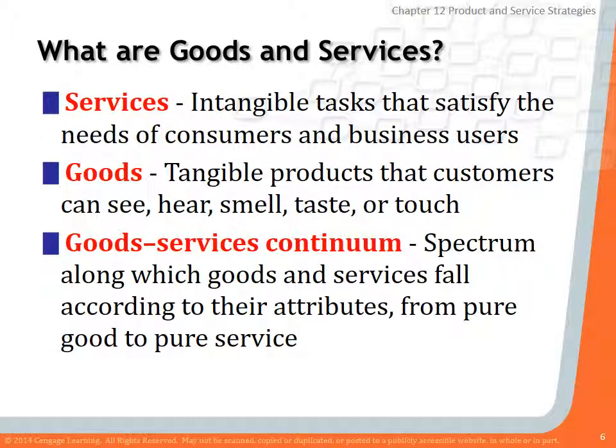A product can be both a good and a service. A service is something that's intangible — it's not something I can touch, feel, or smell. A good is something that's tangible, something I can see, hear, smell, taste, or touch. For example, a service would be something like a haircut, getting your taxes done, or getting your car repaired. A good is easier to understand — if I go out and buy a candy bar, a box of Tide at the store, or an Xbox game, those are all examples of goods.